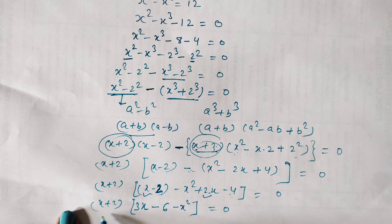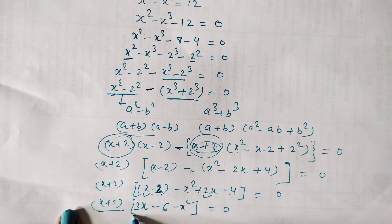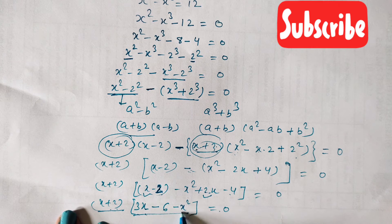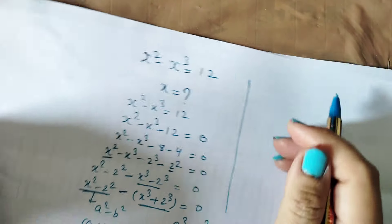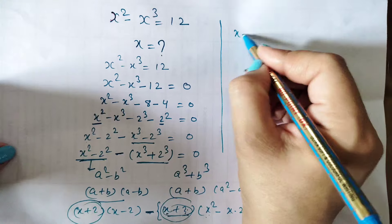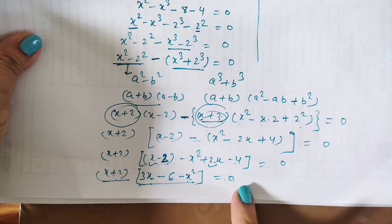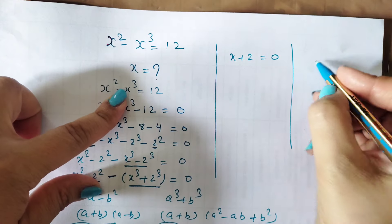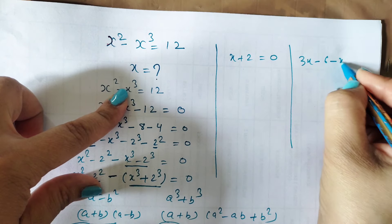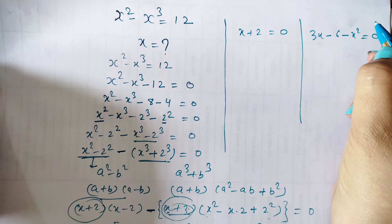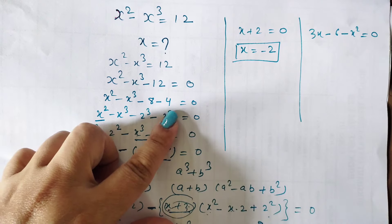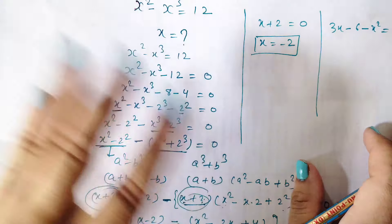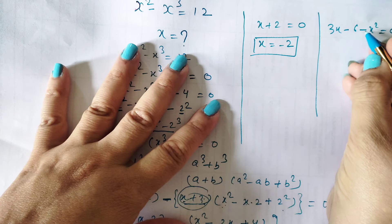Now you can see there are two expressions: x plus 2, and the other expression. We can write x plus 2 equals 0, and the full other expression equals 0, one by one. From x plus 2 equals 0, the value of x is minus 2. That is the first value, found easily. The second gives us a quadratic equation: 3x minus 6 minus x squared equals 0.